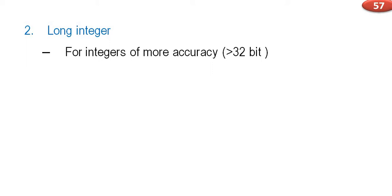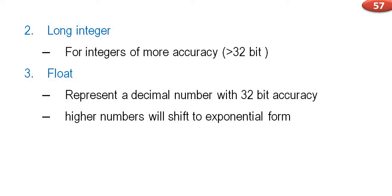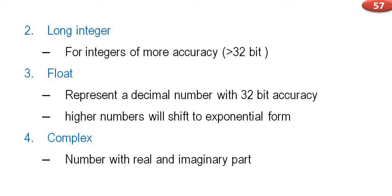Long integer is for integers of more accuracy, meaning greater than 32-bit. Third is float — it represents a decimal number with 32-bit accuracy, so instead of 10 or 20, you can use something like 10.1 or 10.0. These are decimal floating point values. Higher numbers will shift to exponential form — for example, the mass of an electron is around 5e-4 atomic mass units.